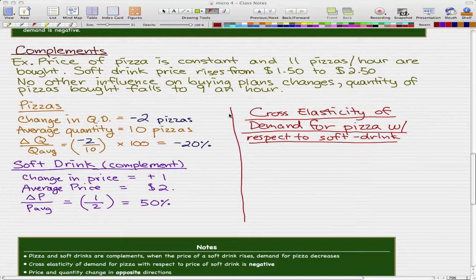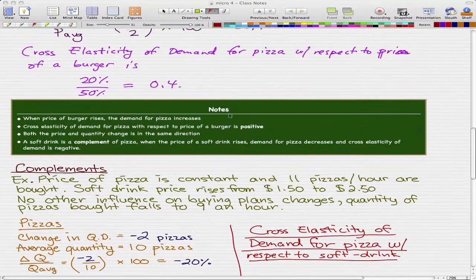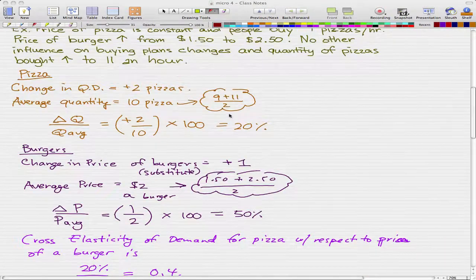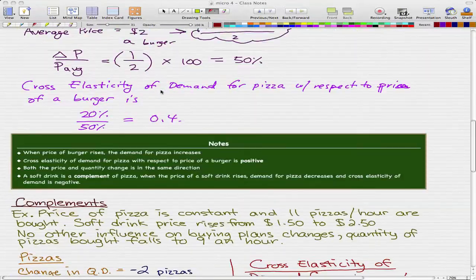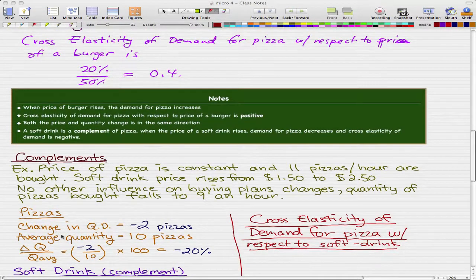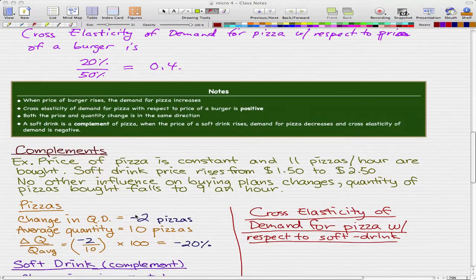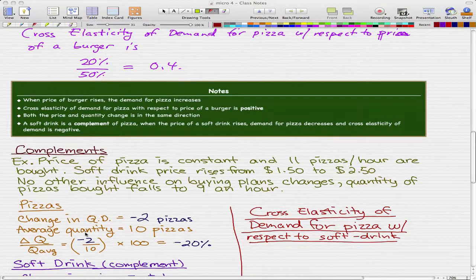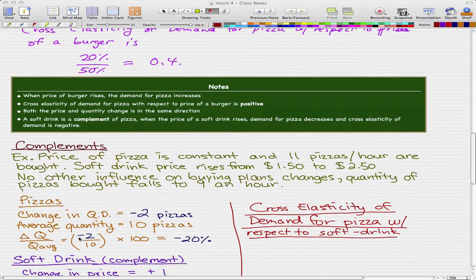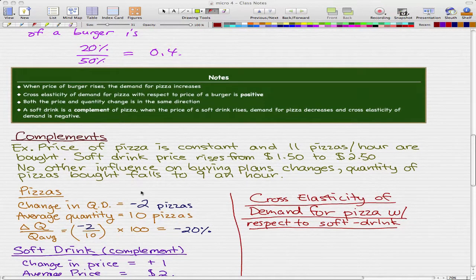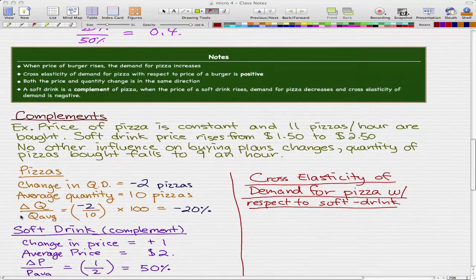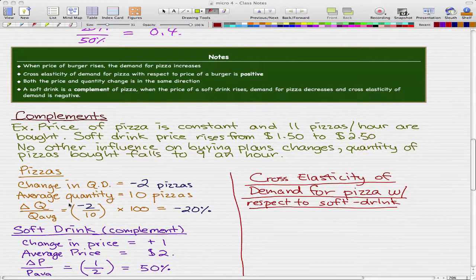So the change is actually negative 2 pizzas whereas before it was plus 2 pizzas. So that's the big change, minus 2 pizzas. The average quantity is the same because 11 plus 9 divided by 2 is 10 pizzas. So really the only change is taking the plus 2 that we had here before, turning that into a negative 2 because we dropped from 11 pizzas to 9 pizzas, and we divide that by 10.